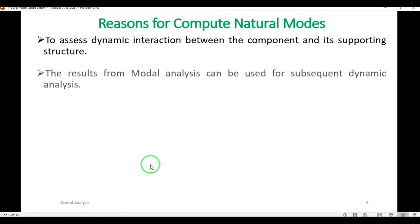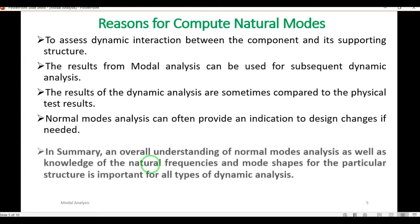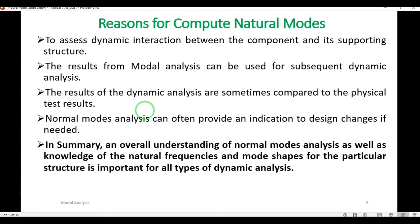Why do we need to compute natural modes — that is, natural frequency and mode shapes? There are four main reasons. The first reason is to assess dynamic interaction between the component and its supporting structures. For example, consider an air conditioning fan attached to the window of a building. If the operating frequency of that fan matches the natural frequency of the window, the window is going to fail. We must calculate this interaction to avoid resonance and failure.